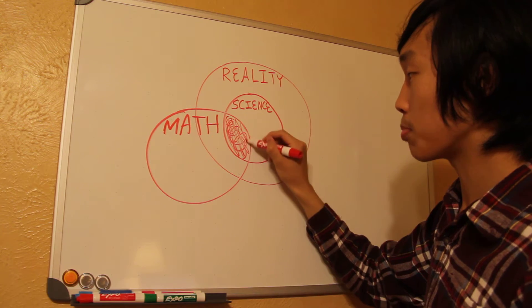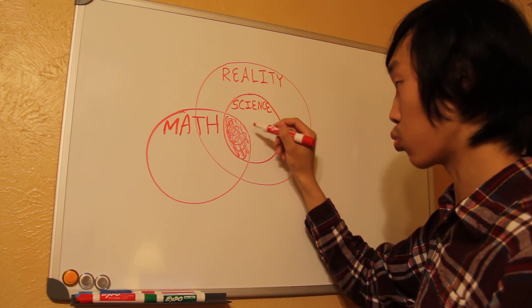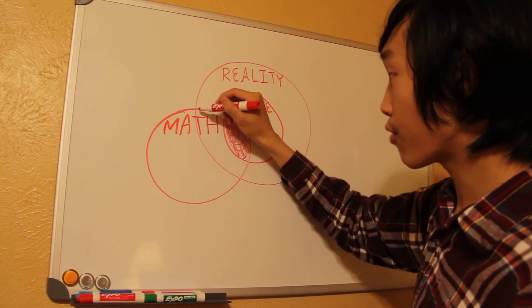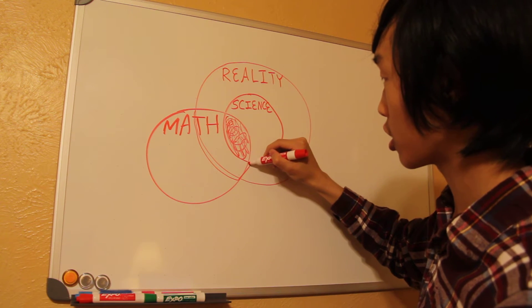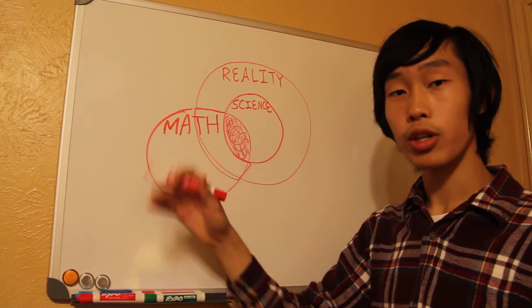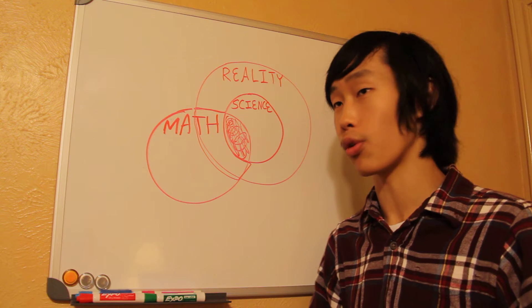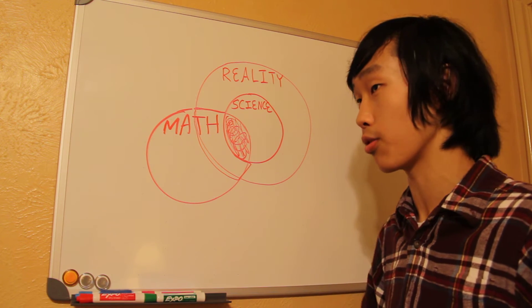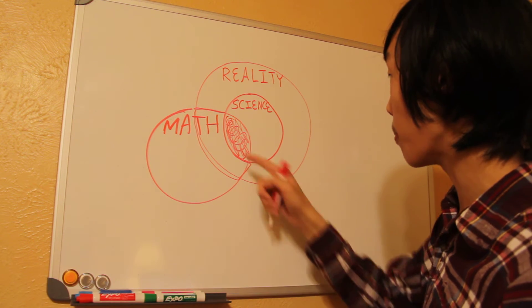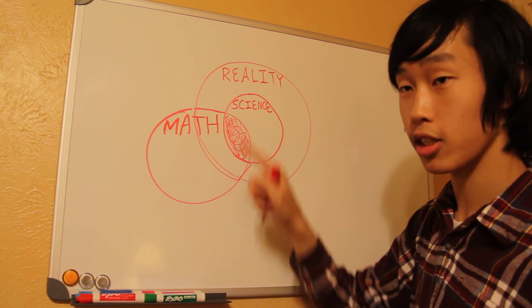This is where you have applicable math. Everything inside here is mathematical, deals with numbers, and it is real. Everything here in this section is real, is mathematical, which means it deals with numbers. Again, you can define math in different ways, but I'm sticking to the definition of a study dealing with numbers. And everything inside here is not science.